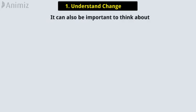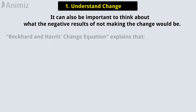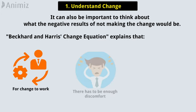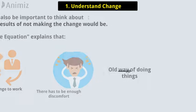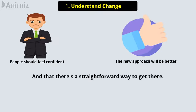It can also be important to think about what the negative results of not making the change would be. The Beckett and Harris change equation explains that for change to work, there has to be enough discomfort with the old way of doing things. People should feel confident that the new approach will be better, and that there's a straightforward way to get there.